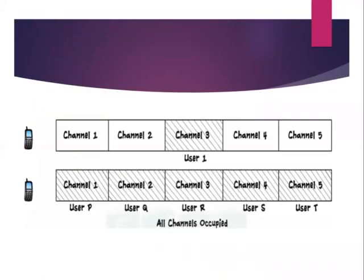Whenever a user makes an attempt to call someone, a separate channel is assigned to the user by the MSC. If all the channels are already occupied by other users, then the user has to wait for a channel to become free. In such a case, the user gets a notification such as 'call cannot be completed' or 'network error'.